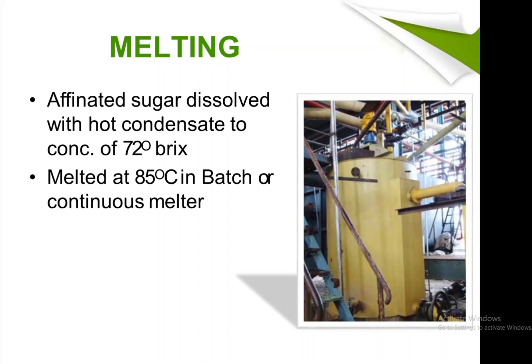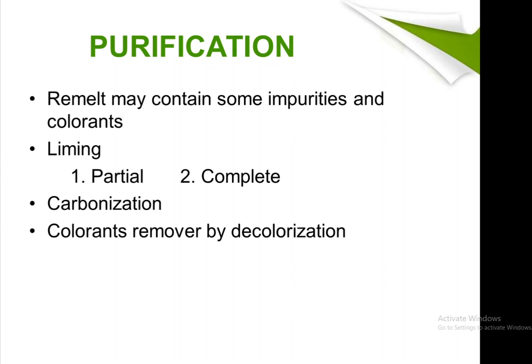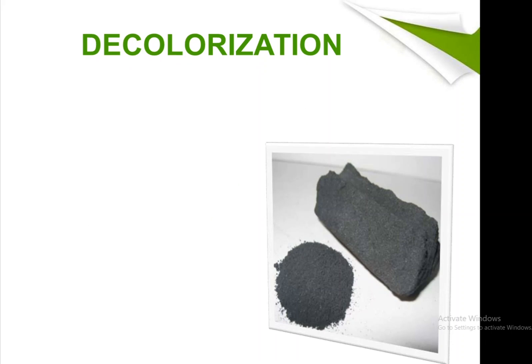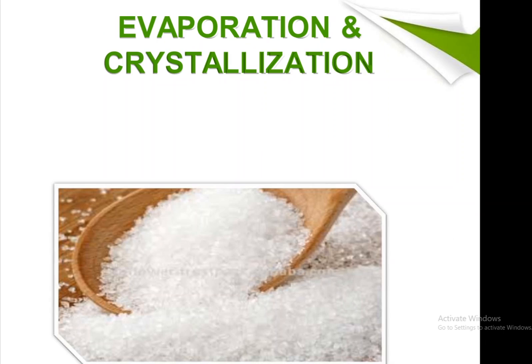After affination, the next step is purification. A remelt process is carried out to address impurities and colorants remaining from the melting process. The sugar is sent for liming, carbonization, and decolorization to remove colorants and impurities. In decolorization, two methods are used: granular activated carbon (GAC) and ion exchange resin.